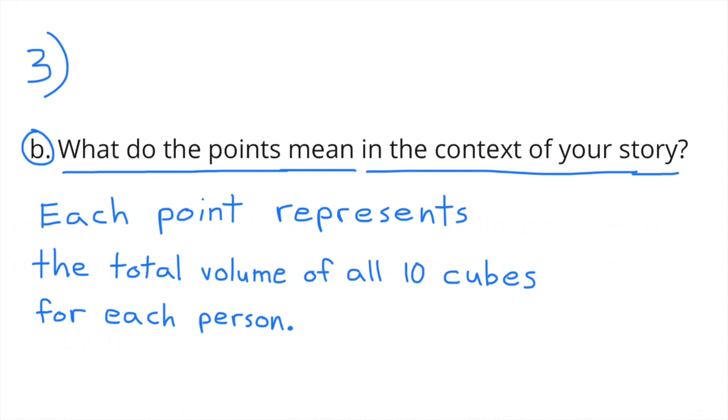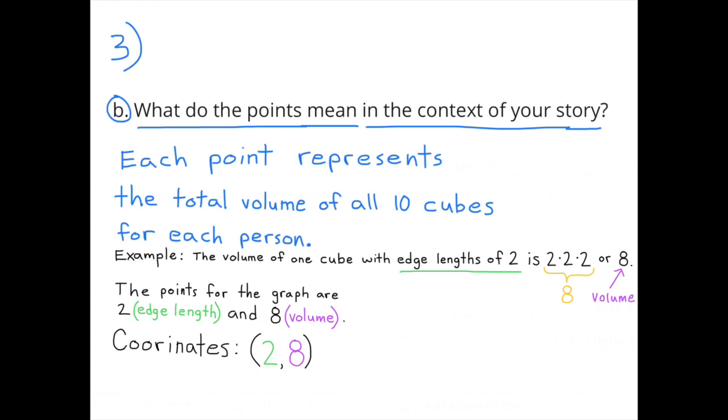B. What do the points mean in the context of your story? Each point represents the total volume of all 10 cubes for each person. For example, the volume of 1 cube with edge length of 2 is 2 times 2 times 2, or 8. So the volume of 1 cube would be 8. The points for the graph are 2 for the edge length and 8 for the volume. So the coordinates would be 2 and 8.